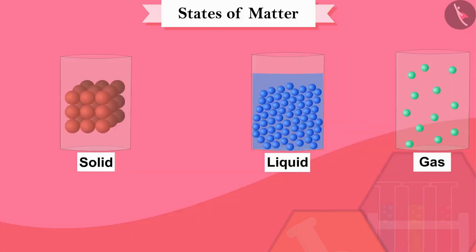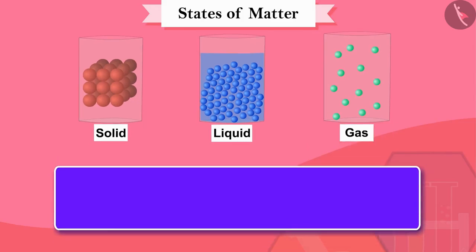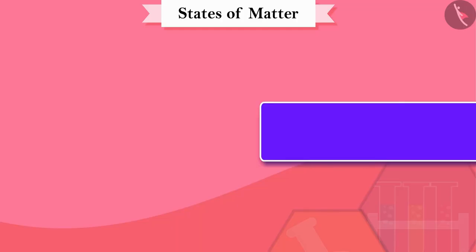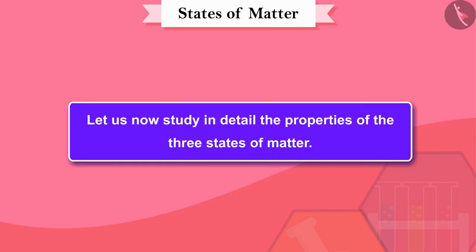You may be thinking: how can we find the states of matter? The states of matter are due to the different characteristics of its particles. Let us now study in detail the properties of the three states of matter.